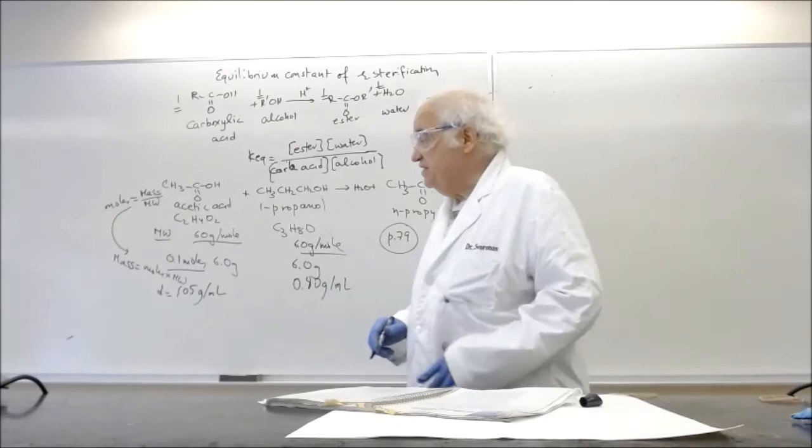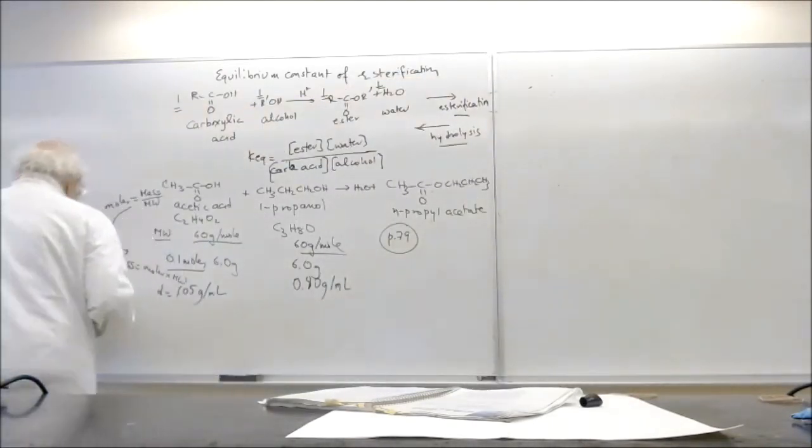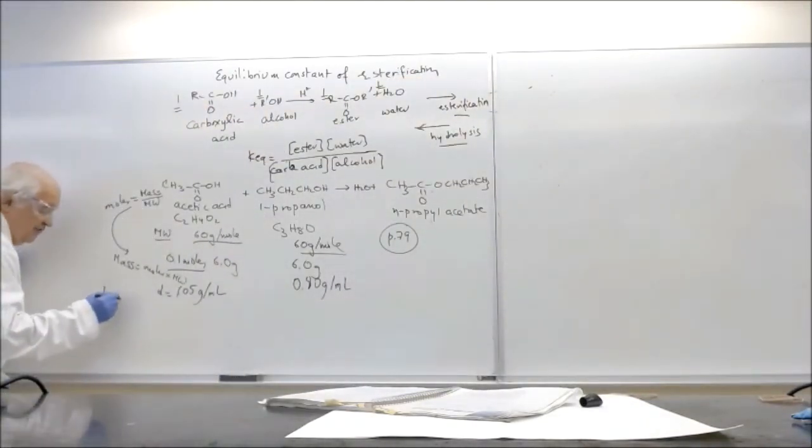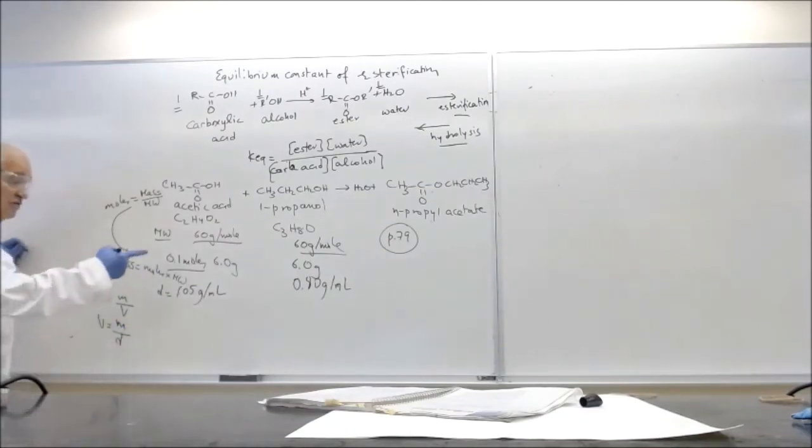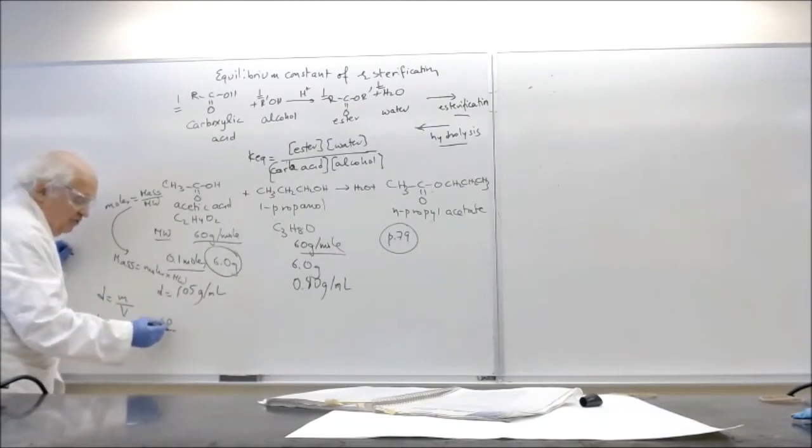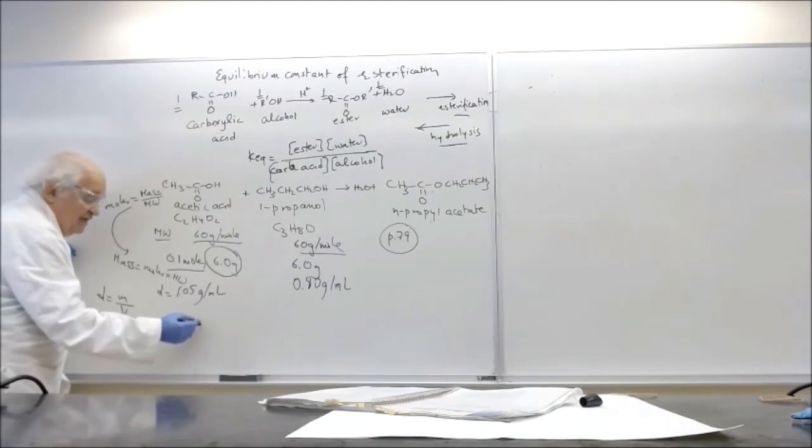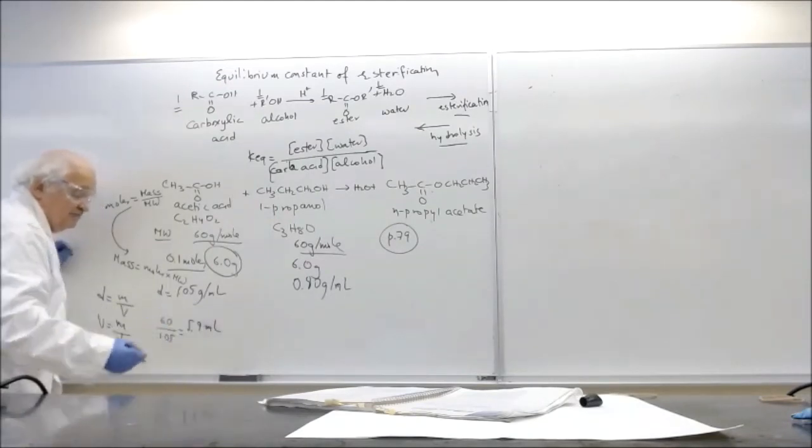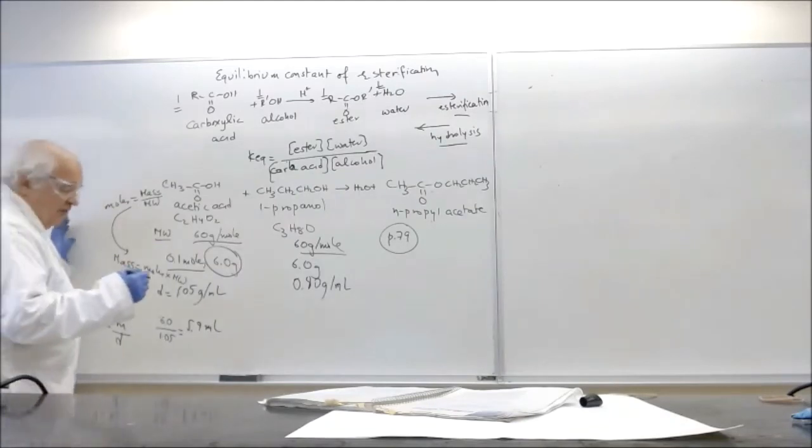Now remember, density is what defined from general chemistry? Density is mass over volume, which means the volume here must be the mass over density. So if I need 6.0 grams, this means I have to weigh 6.0 over 1.05, which is roughly about 5.9 milliliters.